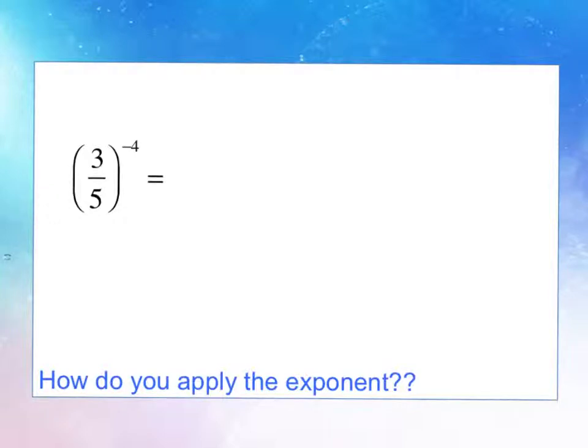The previous property showed us what to do when you have a positive exponent, and now I'm going to show you what we need to do when there's a negative exponent. So I'm going to go, again, the long way, and the long way uses the last property we just learned about distributing the exponents. So I'm going to get 3 to the negative 4th over 5 to the negative 4th.